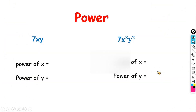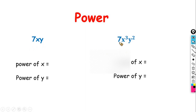Before we see the types of terms, we need to understand the concept of the power of a variable. Let's consider two different terms. The first term is 7xy and the second term is 7x³y².